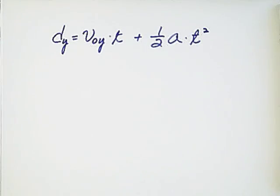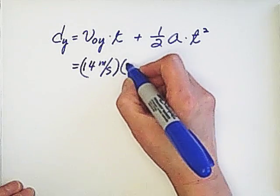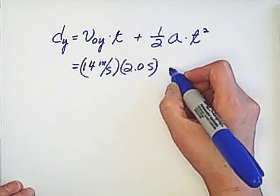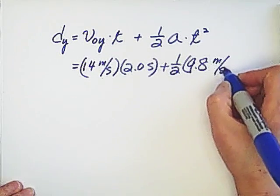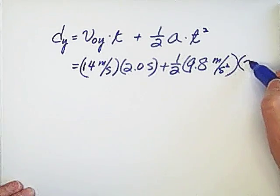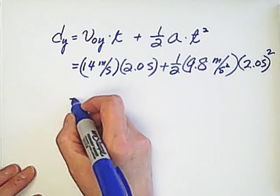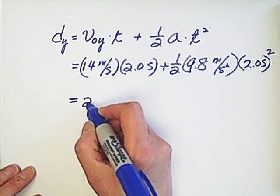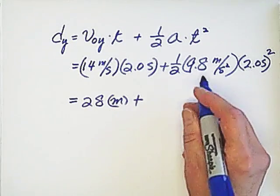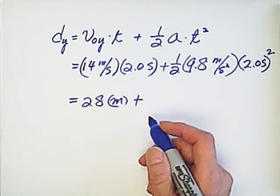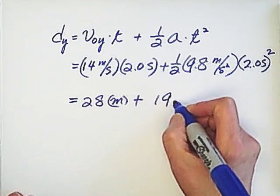So we're given the initial v0y equals 14. We put 14 meter per second multiplied by 2 seconds plus 1 over 2, 9.8 meter per second square times 2 squared. So we have 28. This second, this second cancel out. We have 28 meter plus 1 over 2 multiplied by 9.8 equals 4.9. Then multiply 4. We got 19.6 meters.